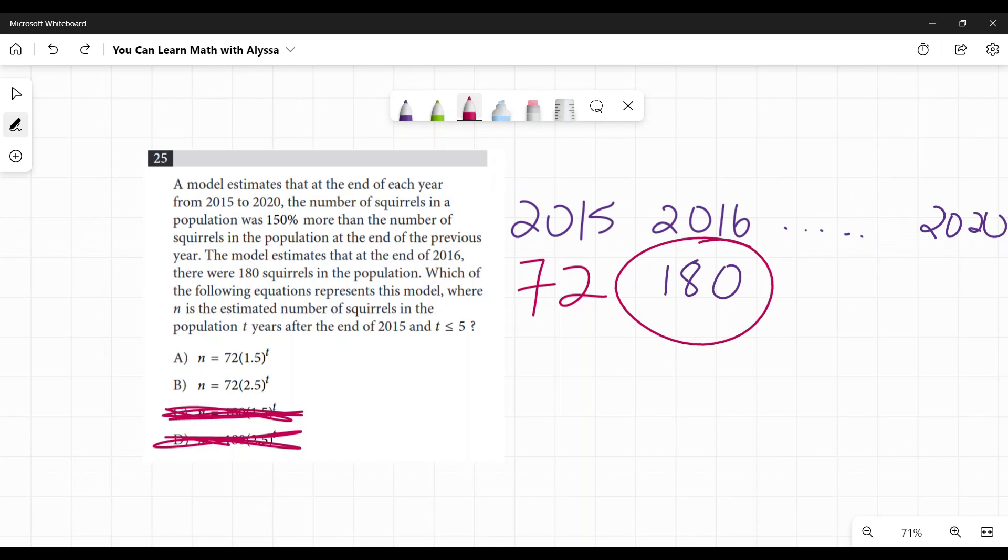You don't really have to know how to do the increase by 150%. You don't have to worry about getting that wrong because all you have to do is say 72 times what equals 180? What did they multiply by that first year to get from 72 to 180? So 72 times our unknown, our x equals 180. We can just divide that in our calculator and it is 2.5. x is 2.5. So right now, I know my answer is b.